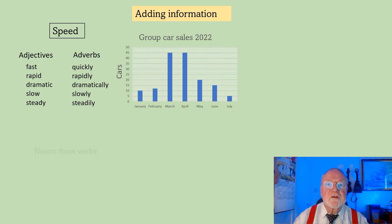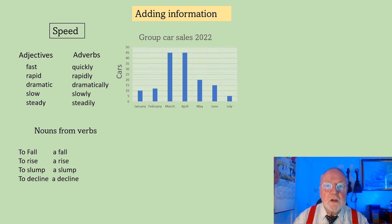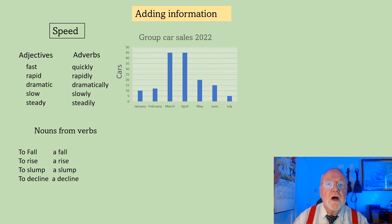We can also make nouns from our verbs, which are very useful. To fall — a fall. To rise — a rise. To slump — a slump. And to decline — a decline.